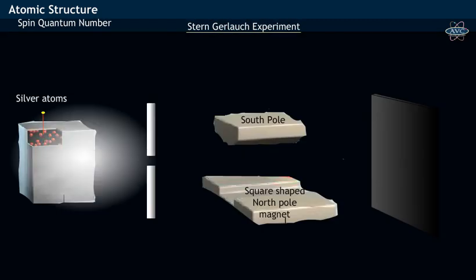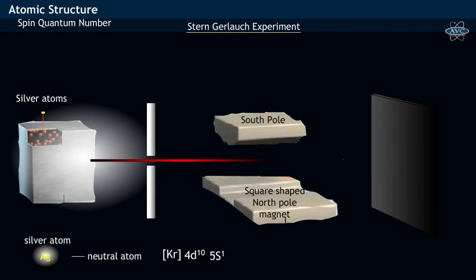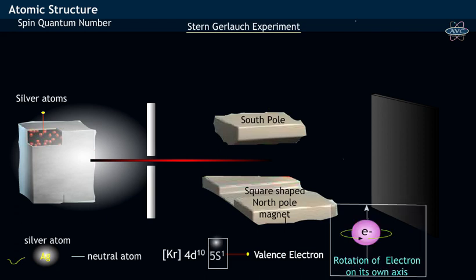In Stern experiment, a thin beam of silver atoms is used. The silver atom, being a neutral species, has electronic configuration of Krypton 4d10 5s1, having one valence electron in s orbital. As silver atom has a single valence electron, its rotation on its own axis generates intrinsic magnetic field and thus behaves as a magnet.